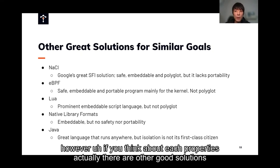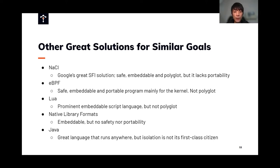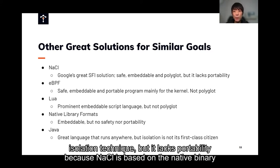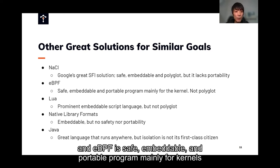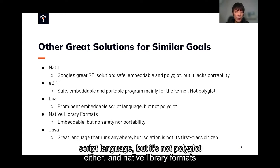However, if you think about each property individually, there are other great solutions for similar goals. For example, NaCl is Google's great software fault isolation solution — it's safe, embeddable, and portable. But because it's language-specific, it's not polyglot. And Lua is a prominent embeddable scripting language, but it's not polyglot either.